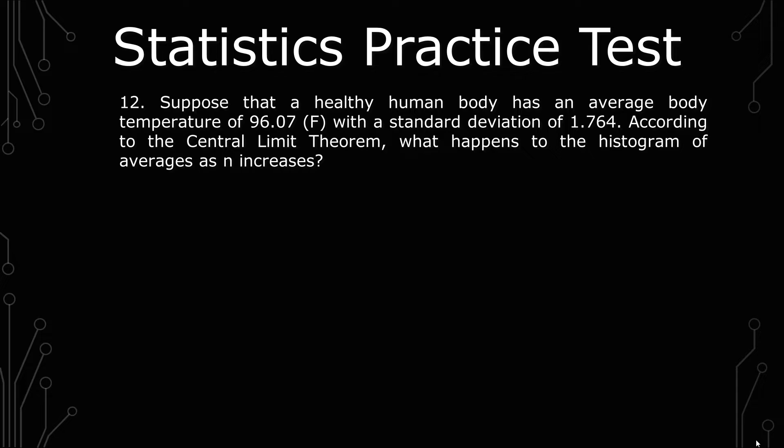The question we have today is, suppose that a healthy human body has an average body temperature of 96.07 with a standard deviation of 1.764. According to the central limit theorem, what happens to the histogram of averages as n increases?